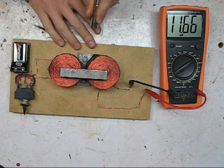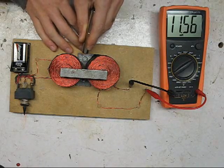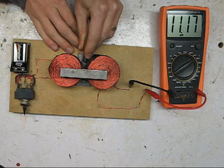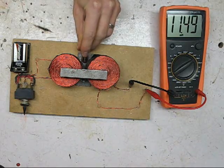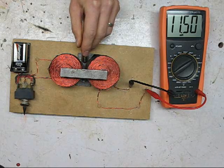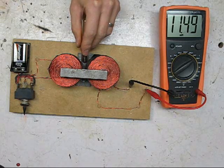See the same thing happening with this magnet as I approach the core. It's going to go down as the core begins to saturate. See? So it went from 11.60 something to 11.50 something.